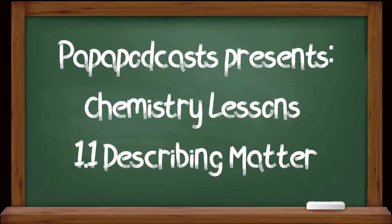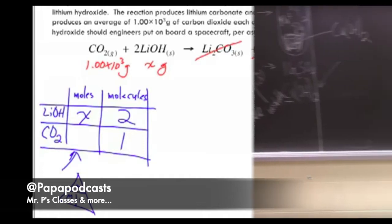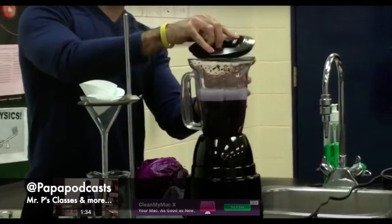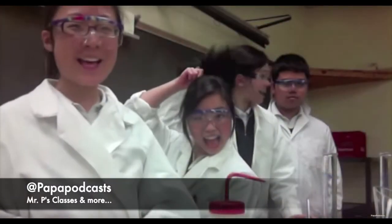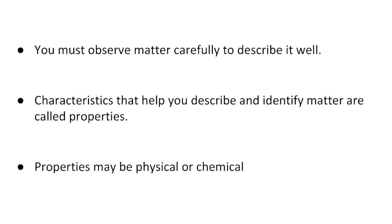PAPA Podcast presents 1.1 Describing Matter. You must observe matter carefully to describe it well. Characteristics that help you describe and identify matter are referred to as properties. We are going to look at two specific properties: physical and chemical properties.